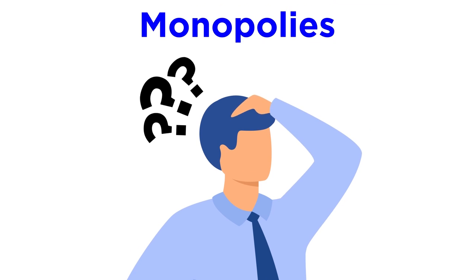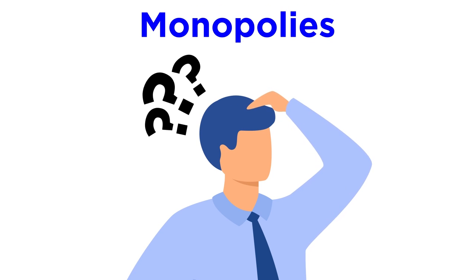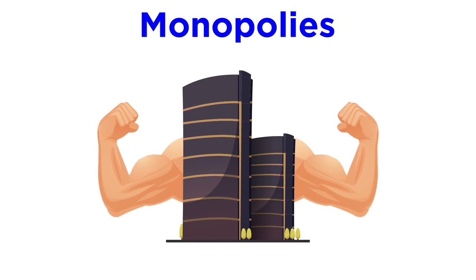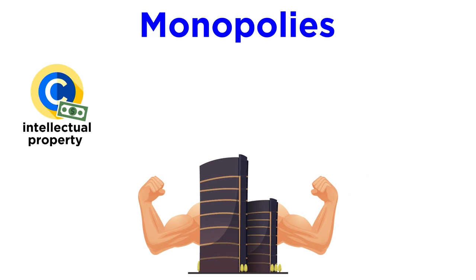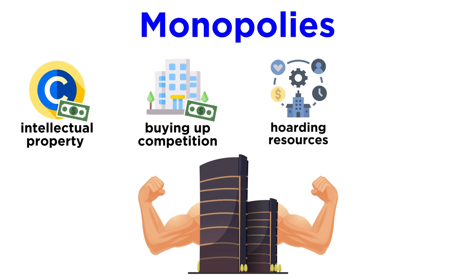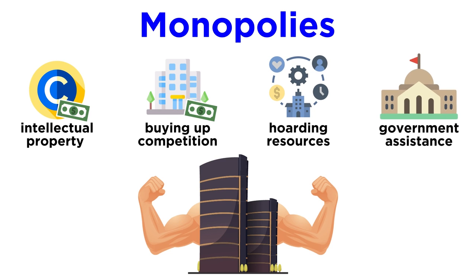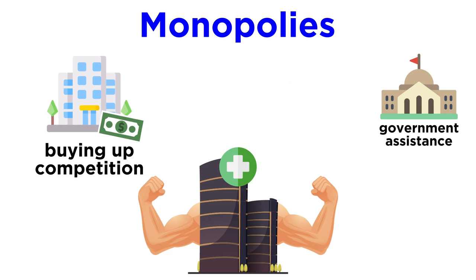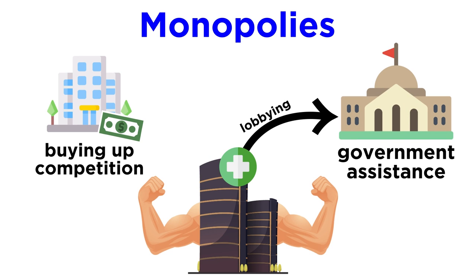So how do monopolies form? Often it's because one company becomes very powerful. It does this by buying up intellectual property rights, buying up competition, hoarding a scarce resource, or even a government giving it an exclusive right to sell something. In the case of our fictional pharmaceutical company, perhaps it bought up the competition and then lobbied for a law to be passed that would effectively make it impossible for competitors to produce the very same drug.